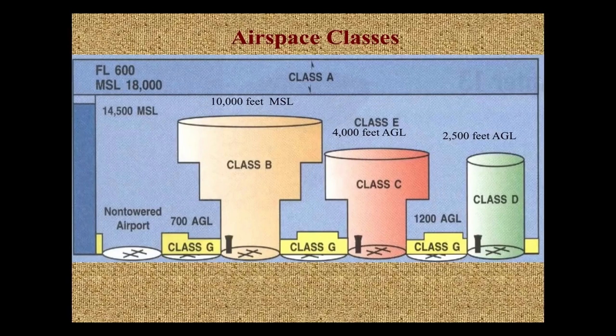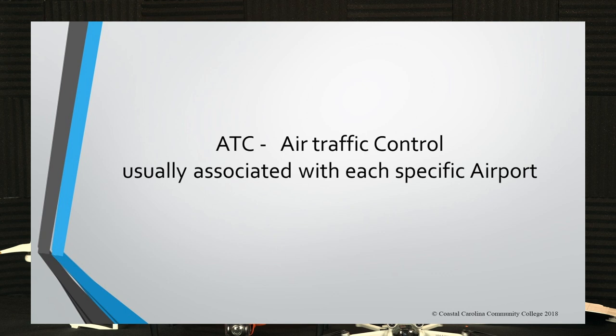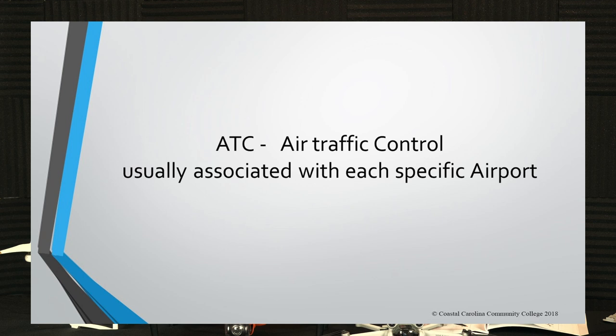Class E is everywhere where there isn't a specific airport with ATC — air traffic control. ATC is usually associated with a specific airport. Jacksonville Airport, for example, has air traffic control associated with it. Some smaller regional airports use a regional air traffic control center. These are the people responsible for managing air traffic to prevent accidents — they control the airspace.